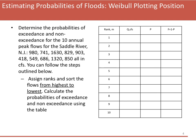Our first step is to rank and sort these flows from highest to lowest and calculate the probabilities of exceedance and non-exceedance using the table provided. Looking through the list, I'm going to find the highest flow, and that highest flow is 1630 CFS. I'll write it up in the first table. The next one is 1320. I encourage you to pause the video, go to the worksheet, and try to rank them yourself.